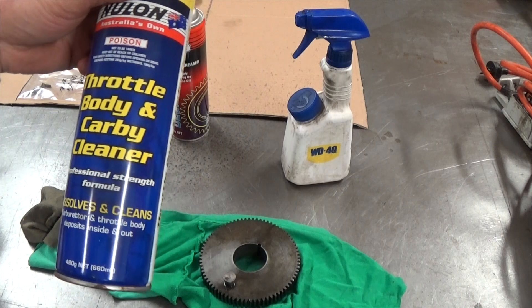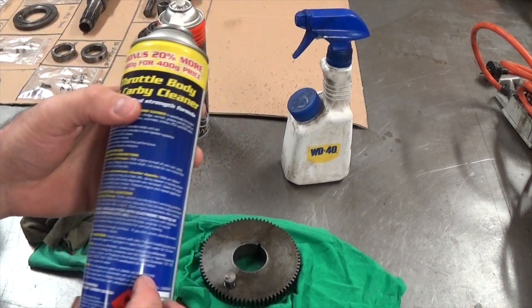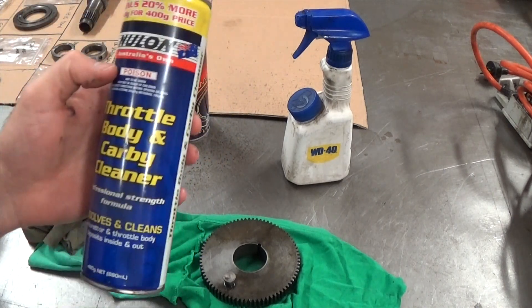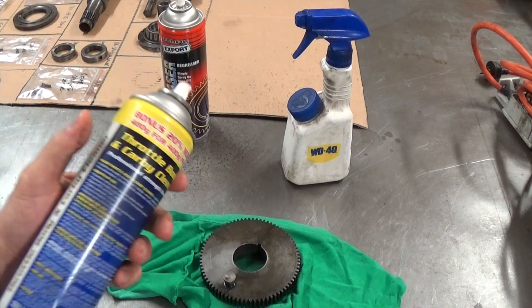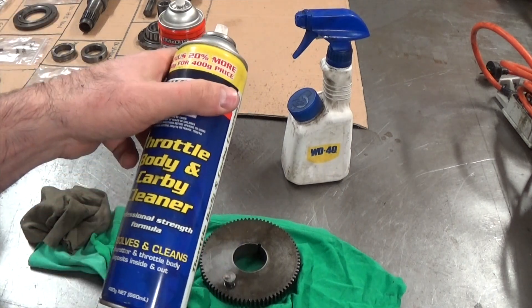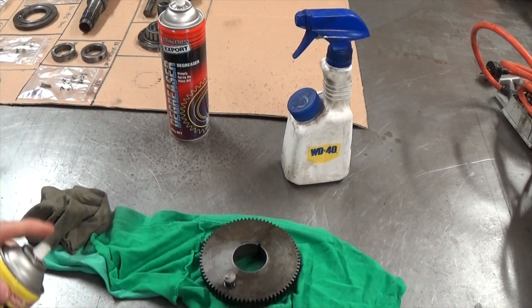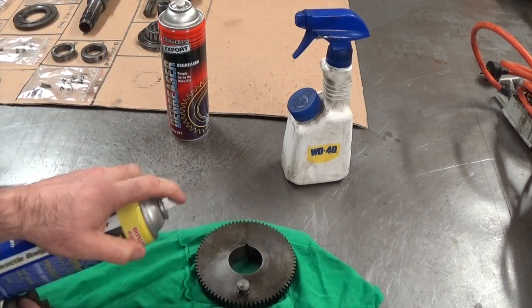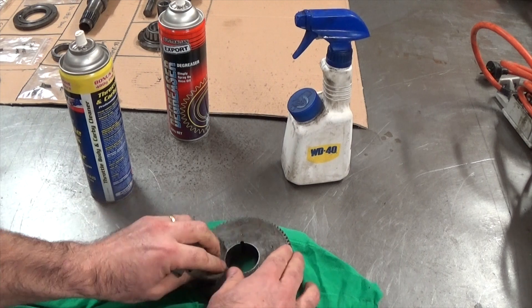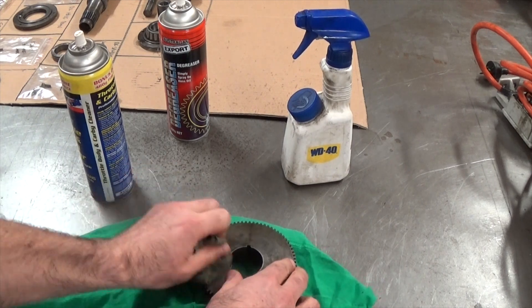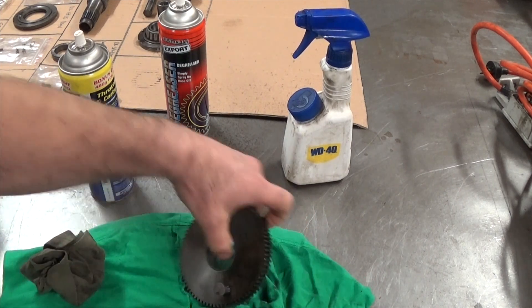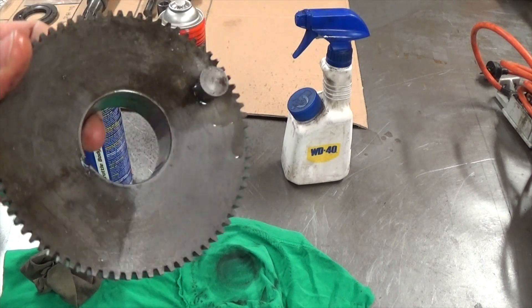Carby and throttle body cleaner does a great job of dissolving and cleaning junk, but again this is not cheap, so you really can't clean a whole engine with it but for small parts or carbs specifically works pretty good. Same deal, spray and wipe, and that does a pretty good job of dissolving grease as well. You can see we're getting a pretty nice finish there.